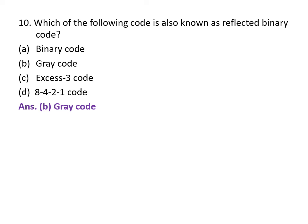Which of the following code is also known as reflected binary code? A. Binary code, B. Gray code, C. Excess-3 code, D. 8421 code. The correct answer is B, Gray code. Gray code is also known as reflected binary code.